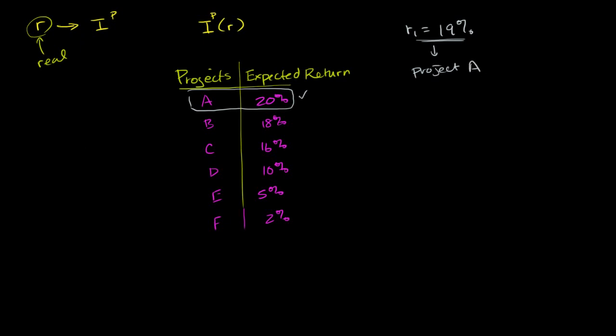Now, let's think about what would happen if interest rates went down, if real interest rates went down. Let's say real interest rate R2 goes down to 3%. Once again, project A you are definitely going to do. If you have the money on hand, you get 20% doing project A, you definitely don't want to lend it out at 3%. If you don't have the money on hand, you can borrow at 3% and invest at 20%.